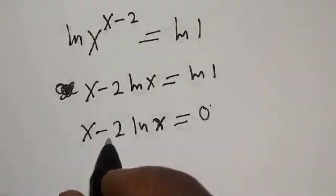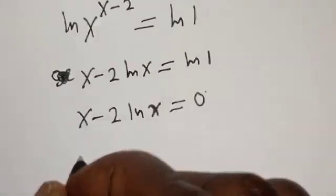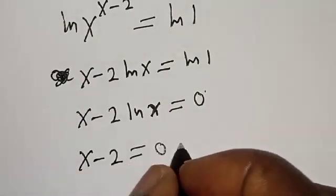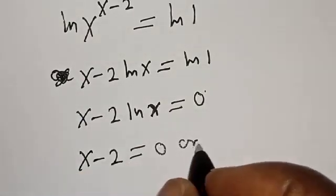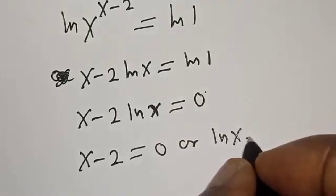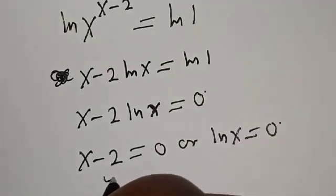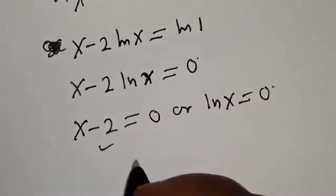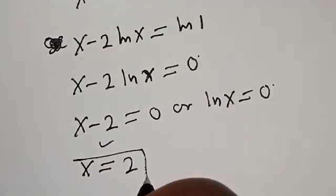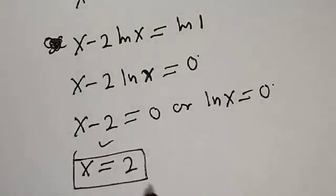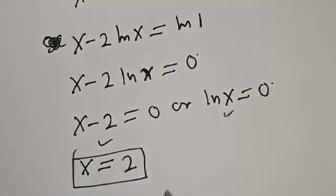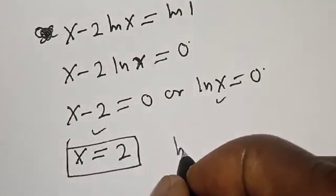Then we have two cases here: s minus two is equal to zero, or natural log of s is equal to zero. From the first case, s is equal to two — that is the first value of s.